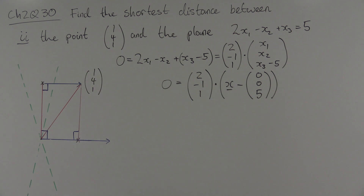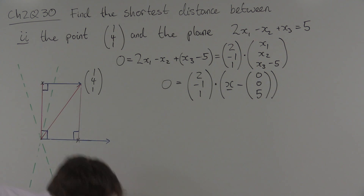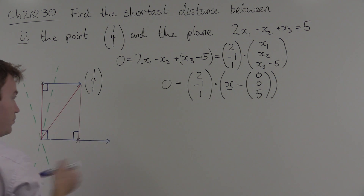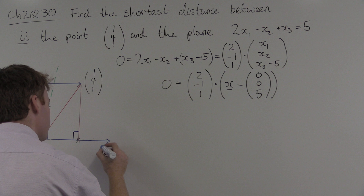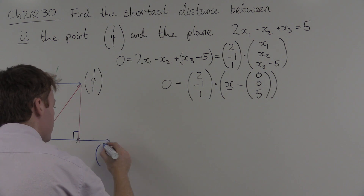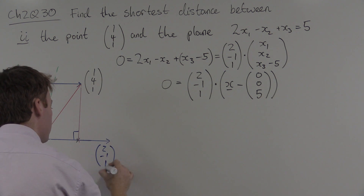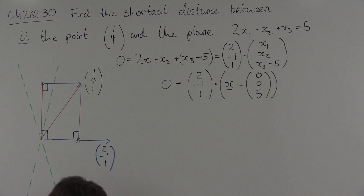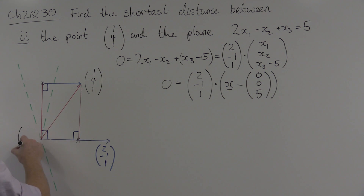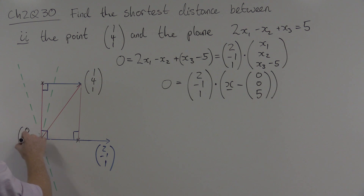Behold, point-normal form of the plane. It is perpendicular to the vector (2, -1, 1), and a point on the plane is the point (0, 0, 5).